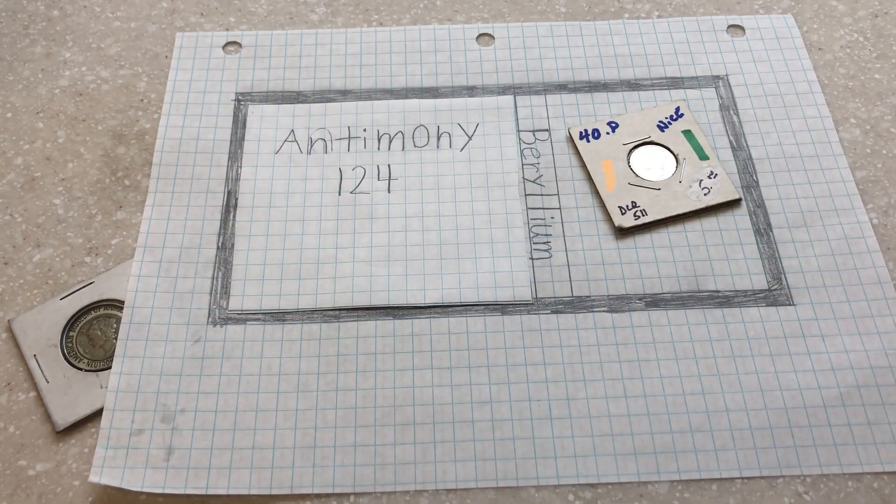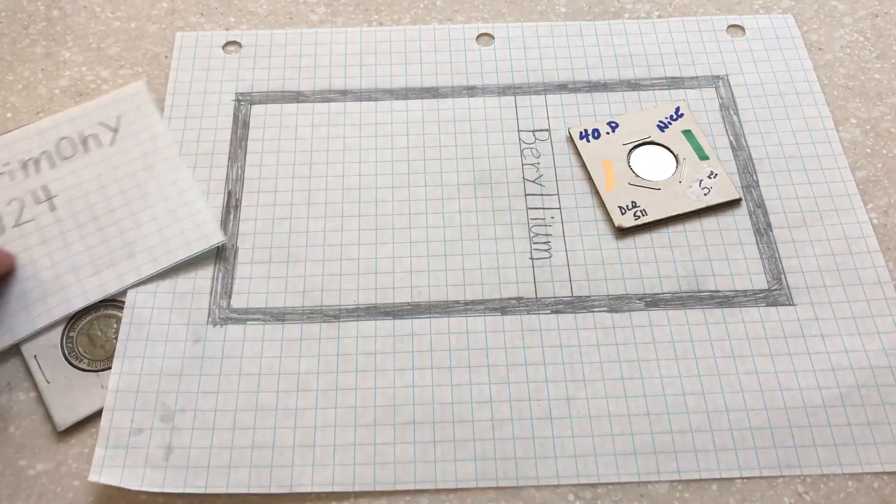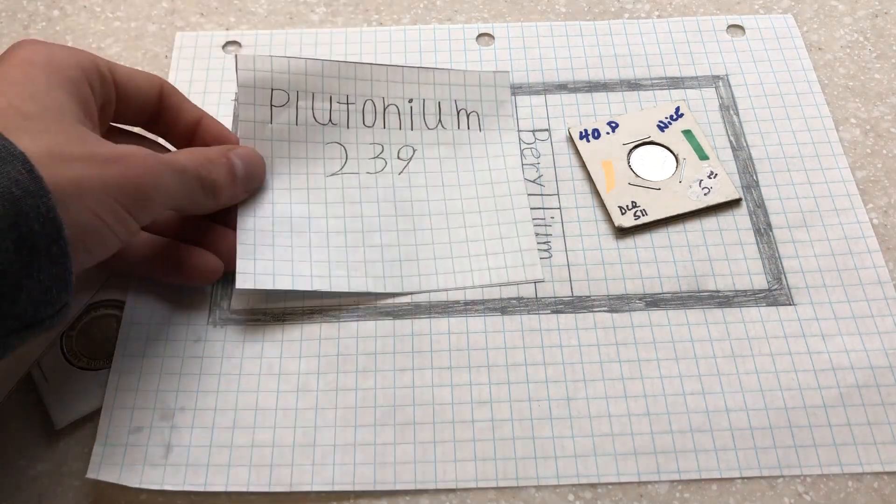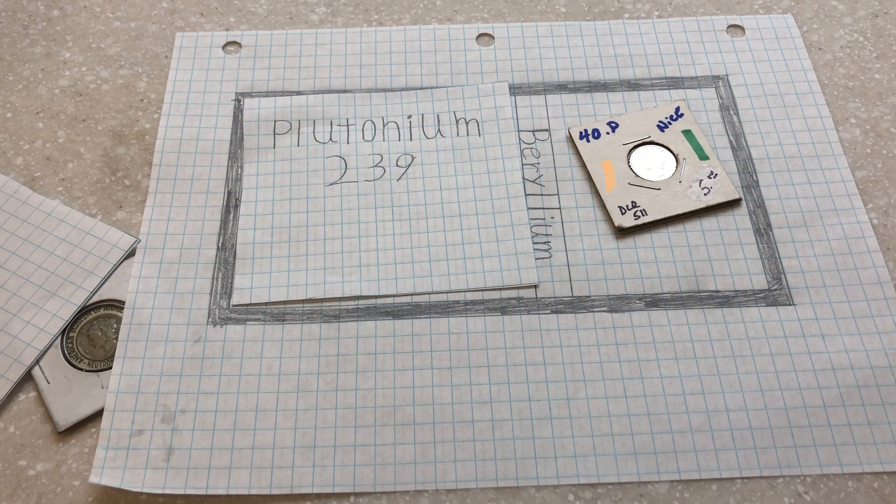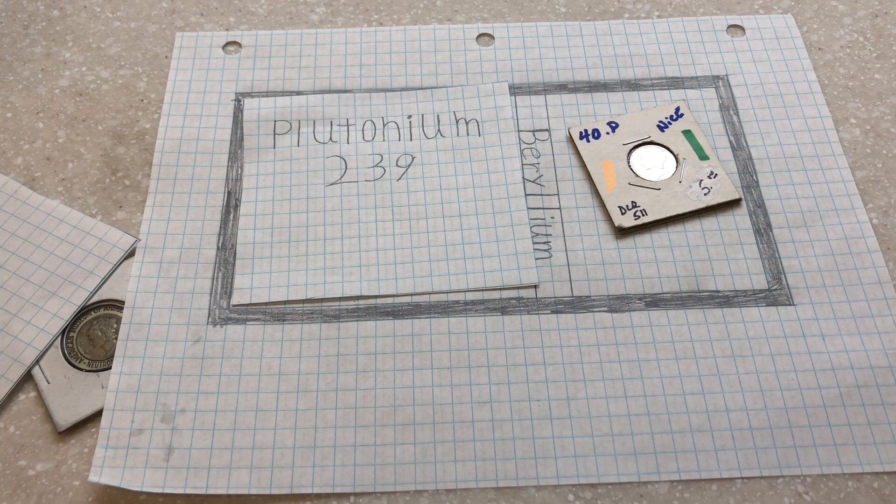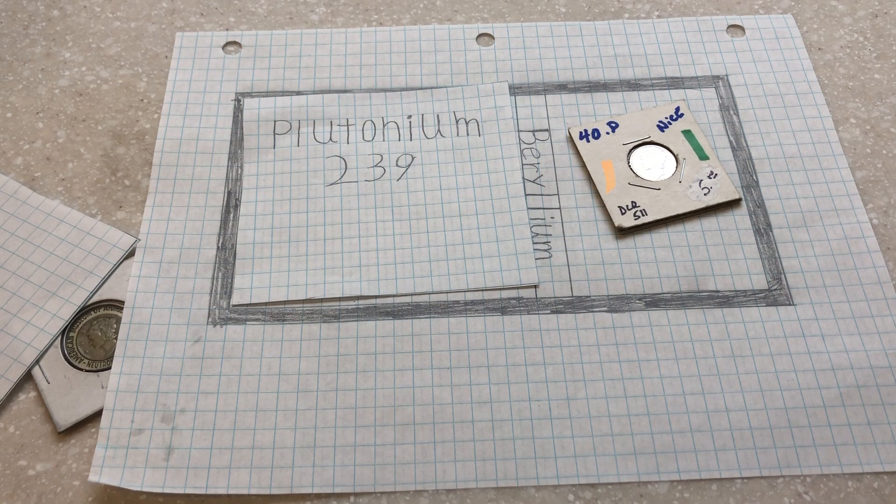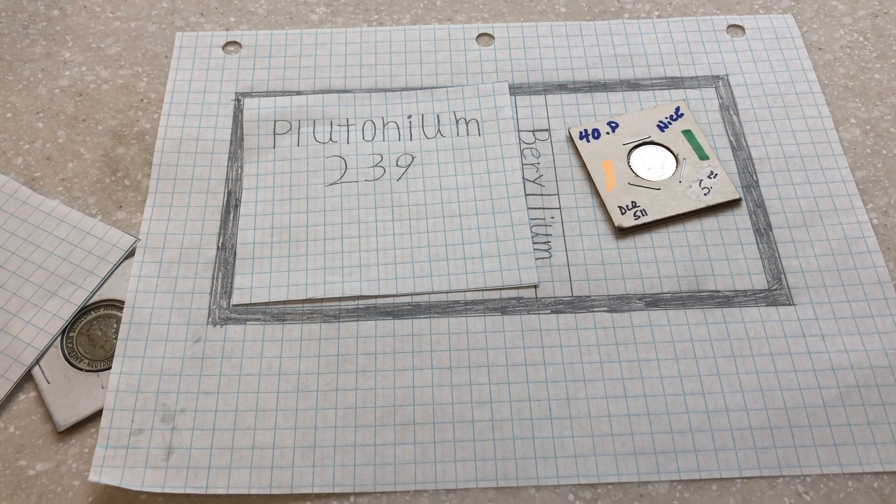The antimony was later replaced with plutonium-239. The reason is antimony has a half-life of 60 days, meaning it would need to be recharged in a nuclear reactor. But plutonium-239 decays in around 24,000 years.